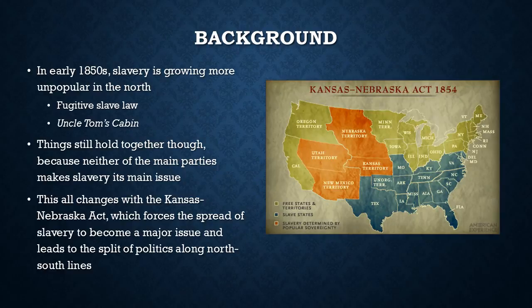Let's get started with some background information. By the early 1850s, slavery had been growing more and more unpopular in the North. Two things led to this: the Fugitive Slave Law, which came about because of the Compromise of 1850, where Southerners could basically kidnap free blacks from the North and transport them back South accusing them of being escaped slaves, and also the publication of Uncle Tom's Cabin, which was basically the bestseller of the time and showed everybody exactly how terrible slavery really was. Because of these two things, Northerners were starting to really dislike slavery and didn't want it to spread any further.